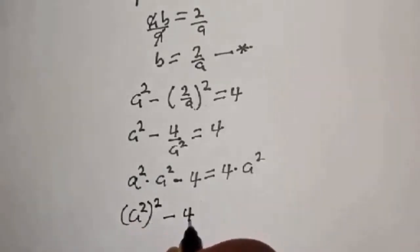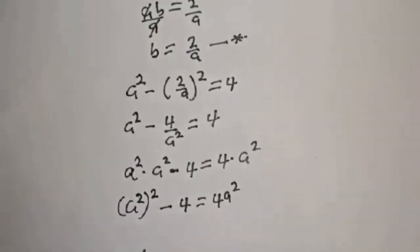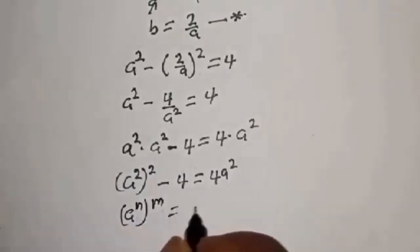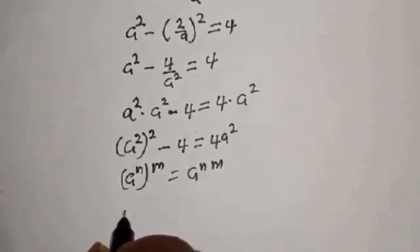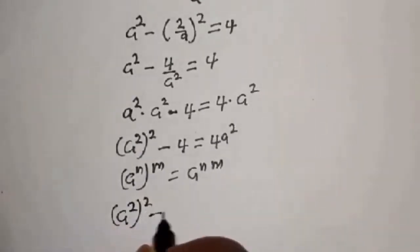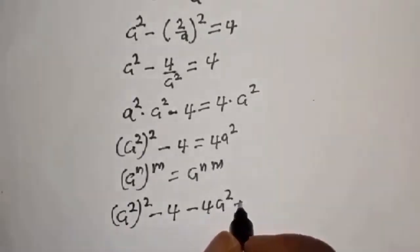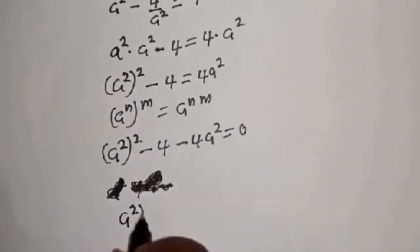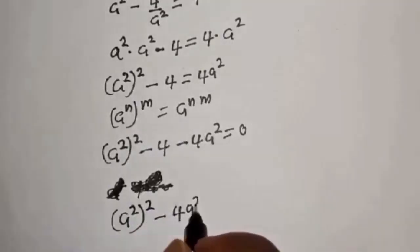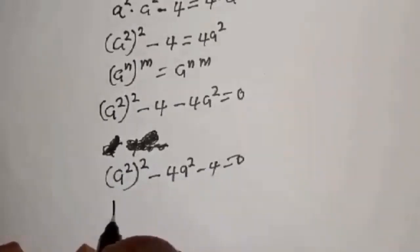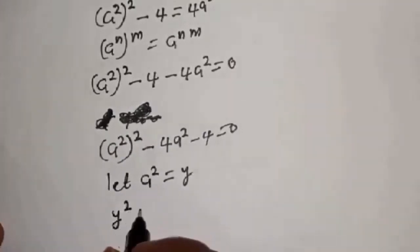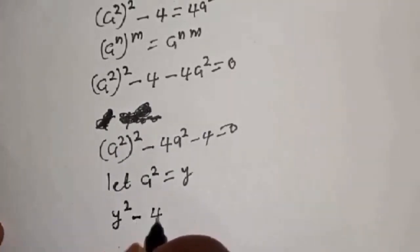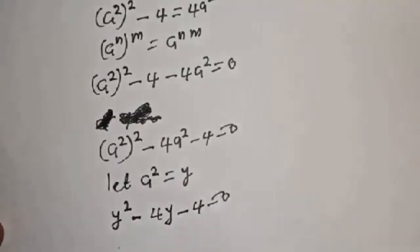Using the rule that a power raised to another power multiplies the exponents, we get a to the fourth minus 4 minus 4a squared equals 0, or a to the fourth minus 4a squared minus 4 equals 0. Now let a squared equal y, giving us y squared minus 4y minus 4 equals 0, a quadratic equation which can be solved using the quadratic formula.